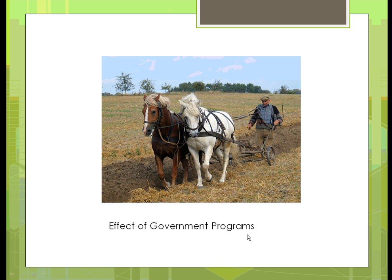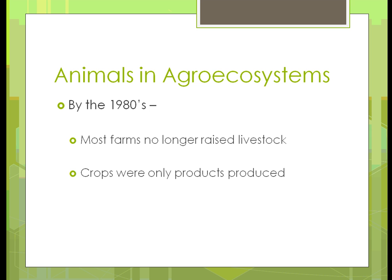The effect of government programs encouraged mechanization — we see this example of using horses, and I don't think we're going to see a program encouraging a return to that. But those government programs totally changed the way we do farming. Because of that, by the mid-1980s, most farms no longer raised livestock at all. If you didn't raise a very large amount of livestock, you weren't going to make much money. The whole economics changed by going to those large stock feedlots. Crops became the only thing farmers did, and without having to milk cows or feed animals every day, there was a lot less work — it was much simpler.